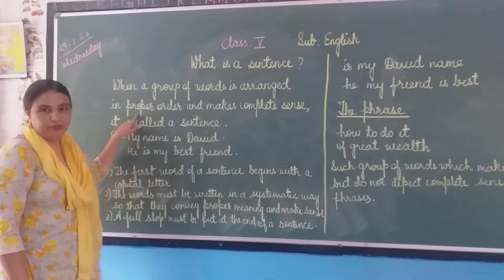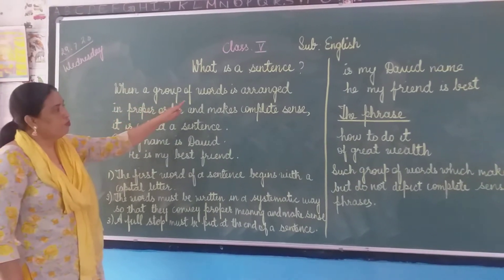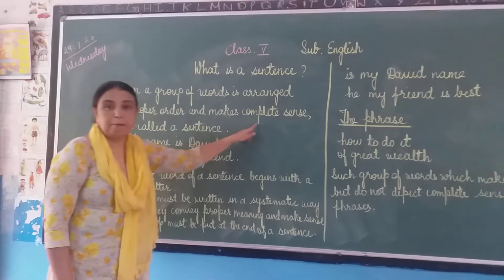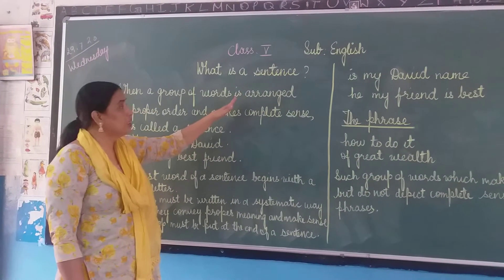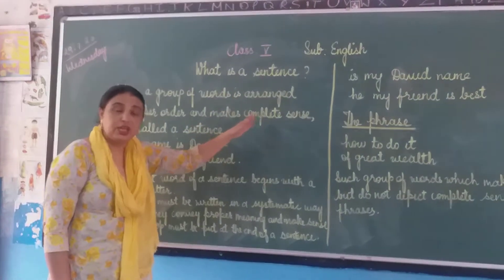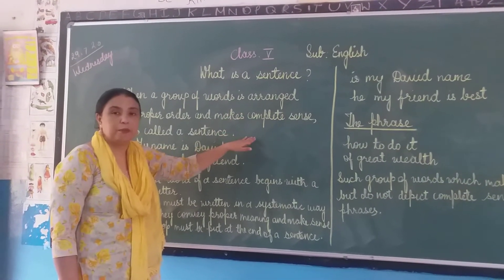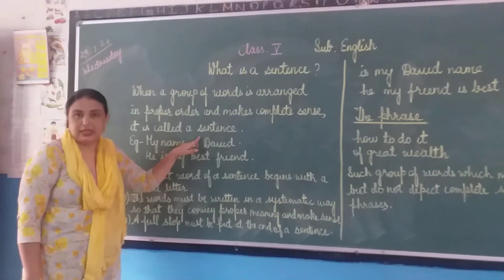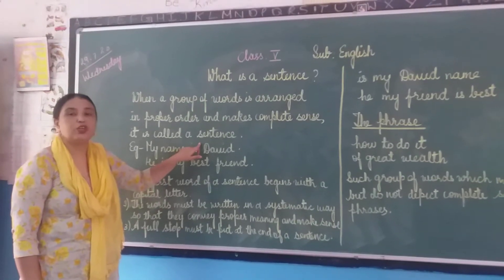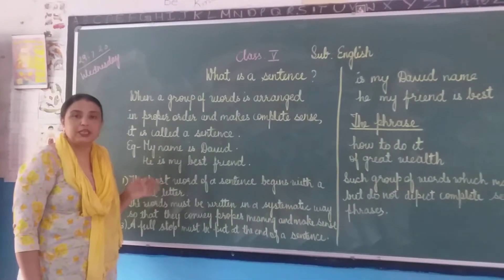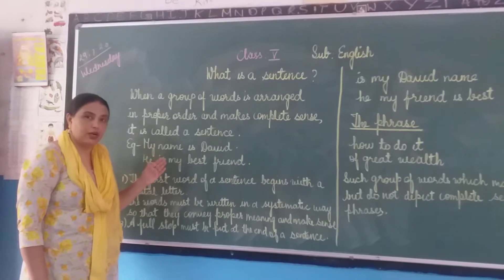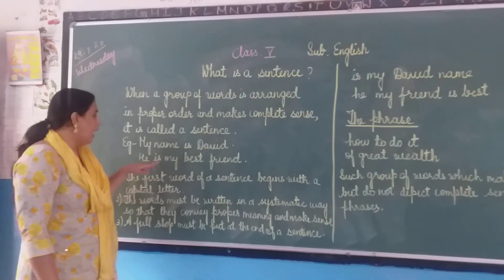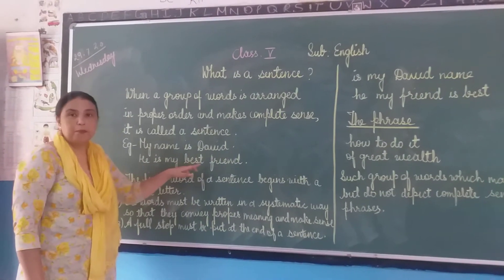I will read out the proper definition of sentence. When a group of words is arranged in proper order and makes complete sense — see, children, both things are important: the words must be properly arranged, and after arranging, it should give a complete meaning — it is called a sentence. Examples: 'My name is David' and 'He is my best friend.'